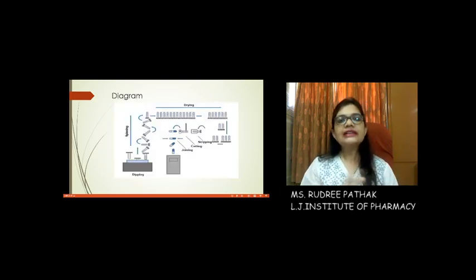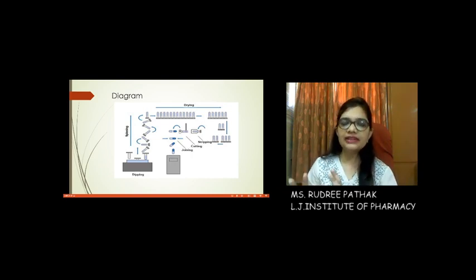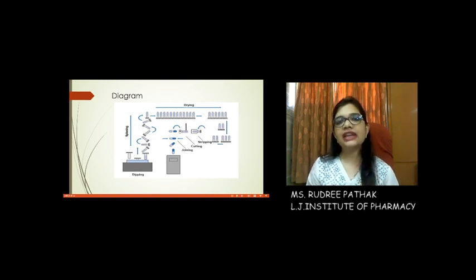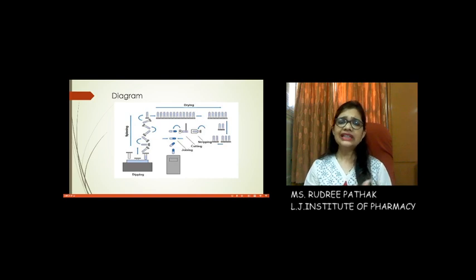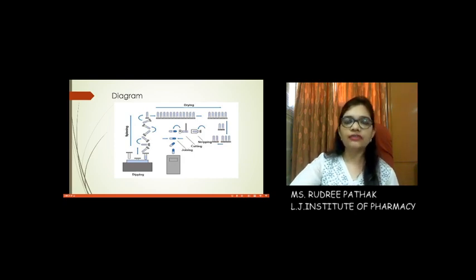This is a diagrammatic representation of how the process actually takes place: the pins are dipped, they are spun, then they are dried, then scraped, then trimmed, then the base and the cap are joined, and then the capsule can be embossed or printed with the company logo depending on the kind of manufacturing.